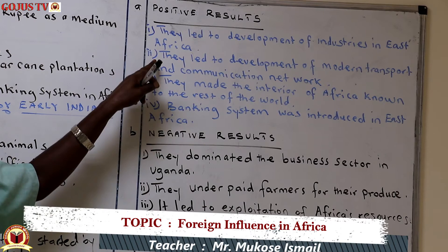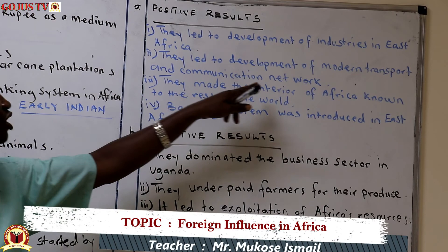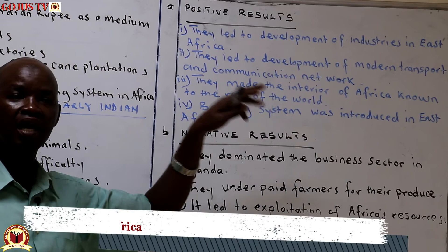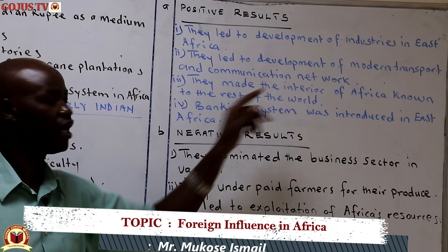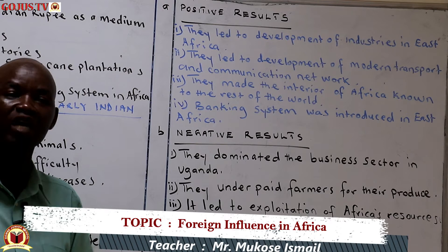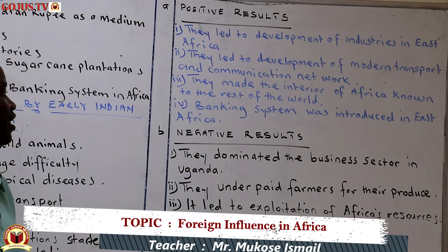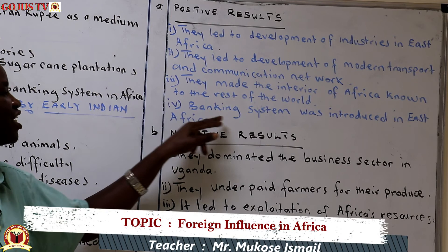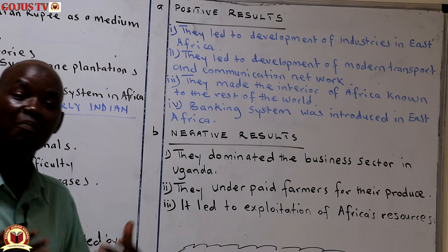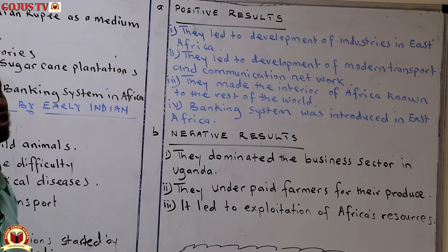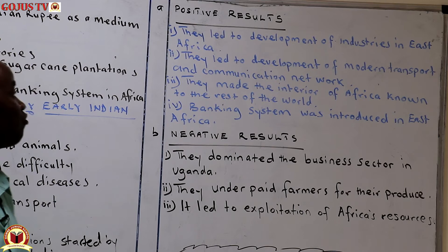Lugazi Sugar Works in Buikwe district were also constructed by Indians. They led to the development of modern transport and communication networks, evidenced by the construction of the Kenya-Uganda Railway. They also made the interior of Africa known to the rest of the world; when the railway was constructed it made transport easy, which encouraged other foreigners to come to the interior of East Africa. The Banianis introduced the banking system, which led to economic development, where people gained skills and others are employed as bankers and tellers in banks.